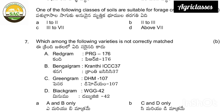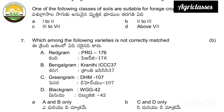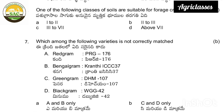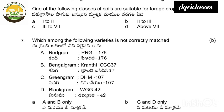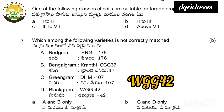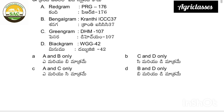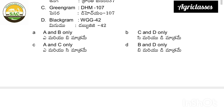The correct answer for forage cultivation soil class is 3 to 7. Next: which among the following varieties is not correctly matched — red gram PRG 176, Bengal gram Kranti, green gram DHM 107, black gram WGG 47. Green gram DHM 107 and black gram WGG are wrongly matched.